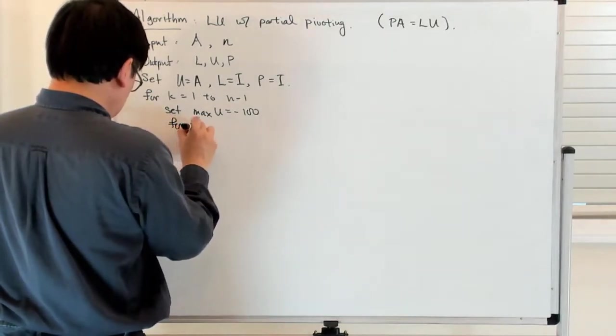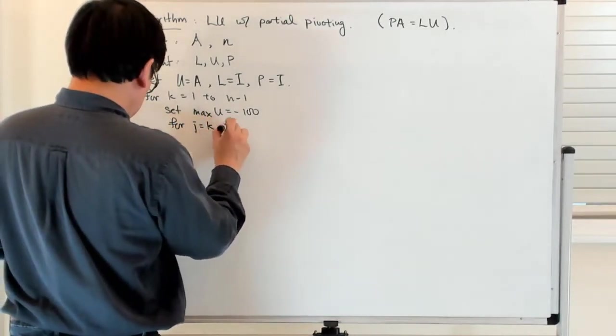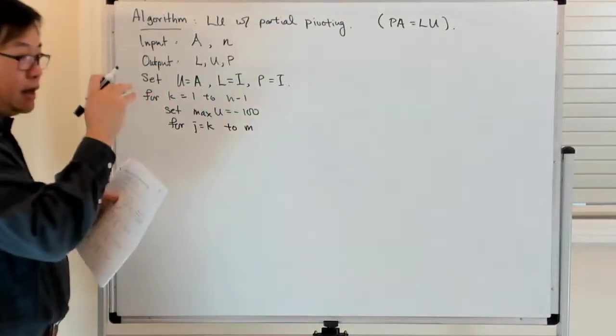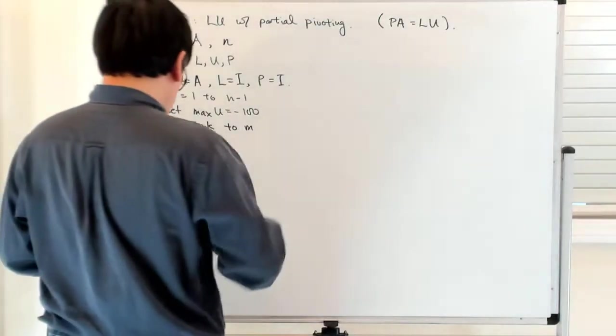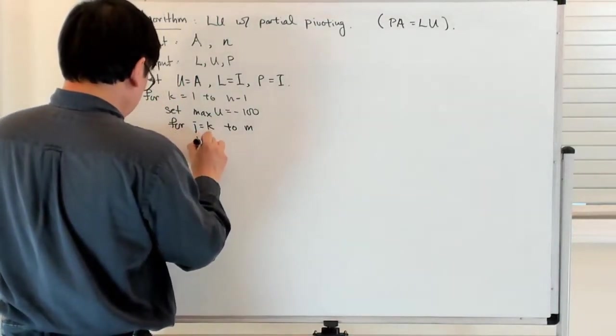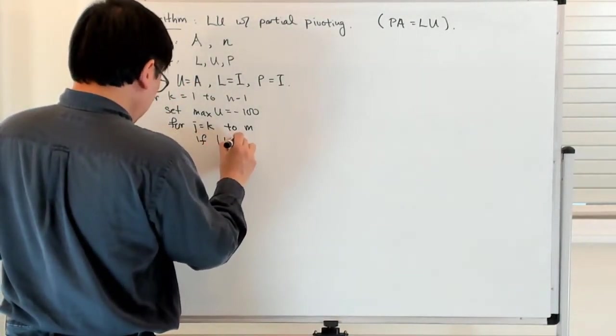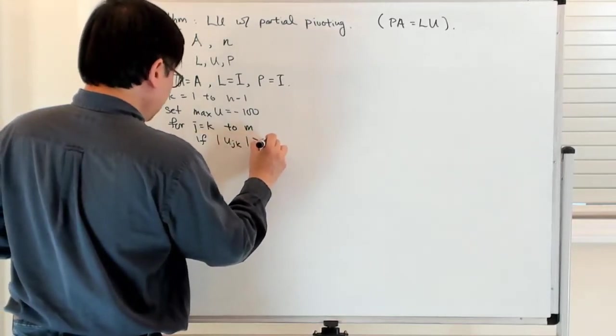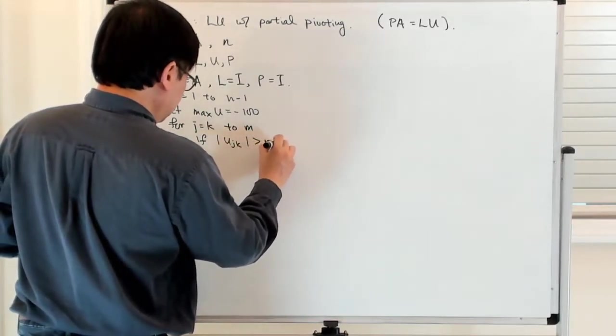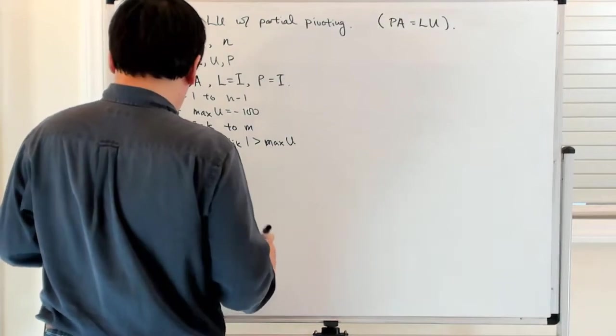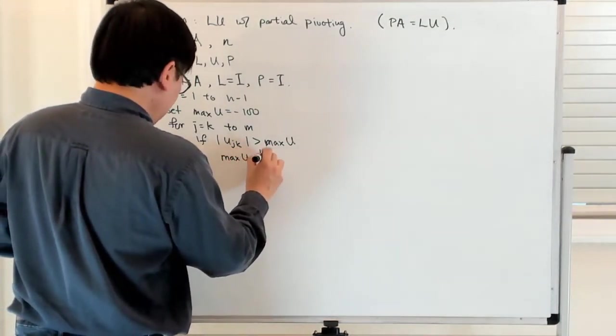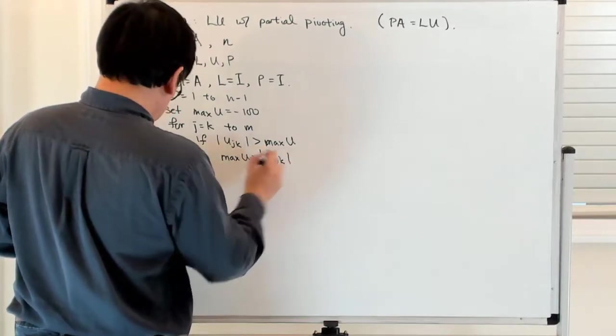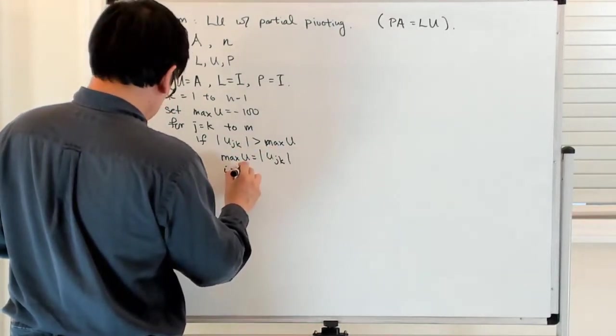For J equals K to M, I'm only looking at the entries on the diagonal below on the Kth column. If the absolute value of U(J,K) is greater than max U, then I update max U equal to the absolute value of U(J,K), and then I is equal to J.